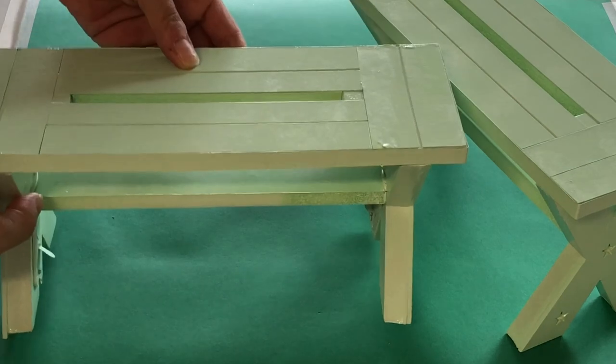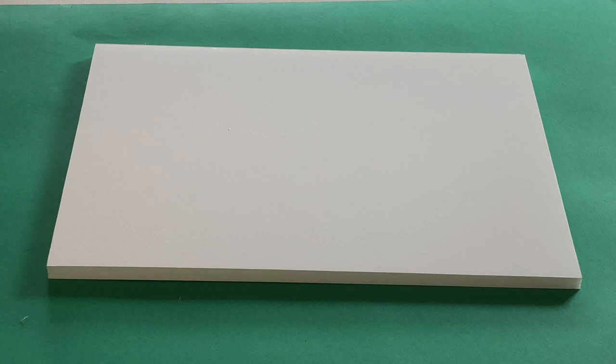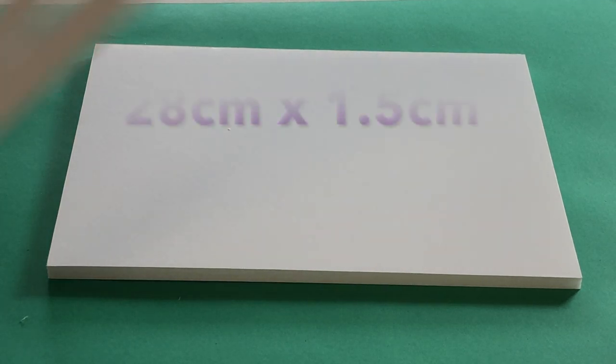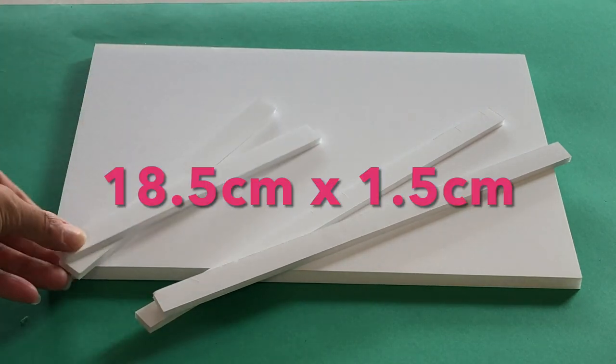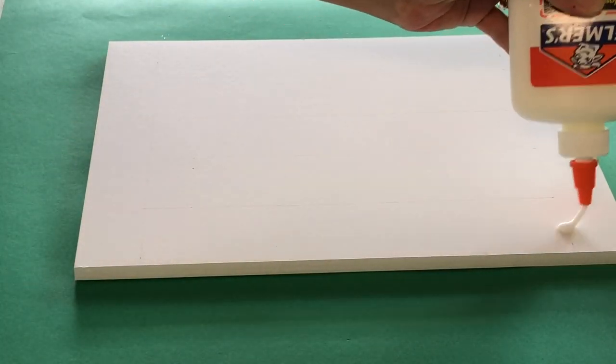Cut a large rectangle of foam board for the tabletop, two long narrow rectangles, and two short narrow rectangles. Cover the tabletop with liquid glue or glue stick. Using a paintbrush is great for spreading the glue out to the edges and keeping an even coverage.